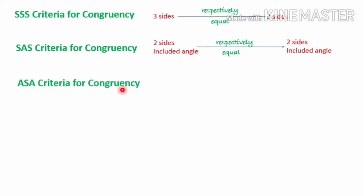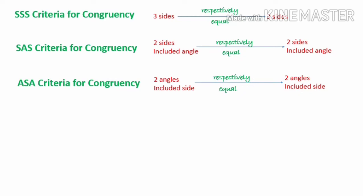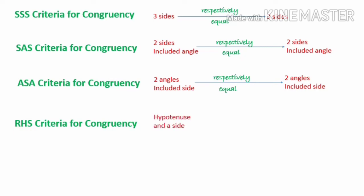The third is ASA criteria: A stands for angle, S stands for side. Two angles and the included side of one triangle are respectively equal to two angles and the included side of another triangle, then the two triangles are congruent. The side is included between the angles, so it is called the included side. The last one is RHS criteria: R for right angle, H for hypotenuse, S for side — exclusively for right-angled triangles. It states that the hypotenuse and a side of one right triangle are respectively equal to the hypotenuse and a side of another right triangle, then the two triangles are congruent. The hypotenuse is the longest side and is opposite to 90 degrees.